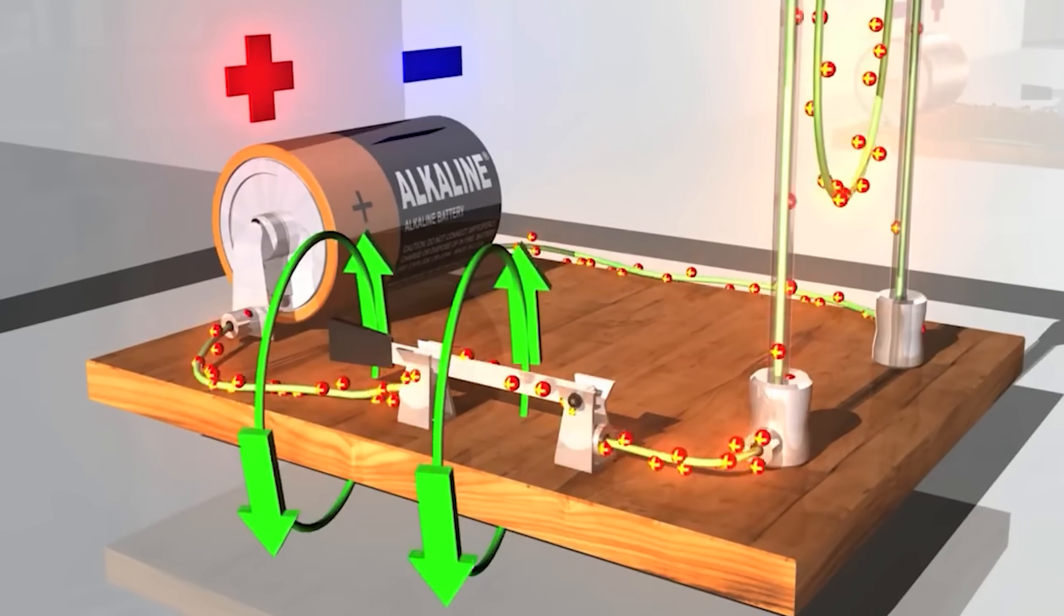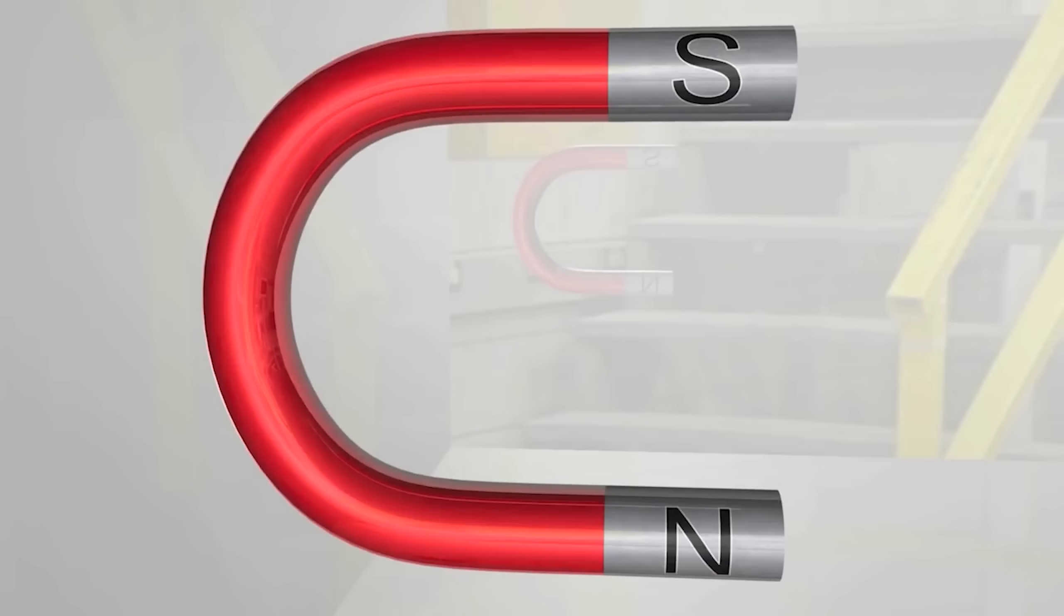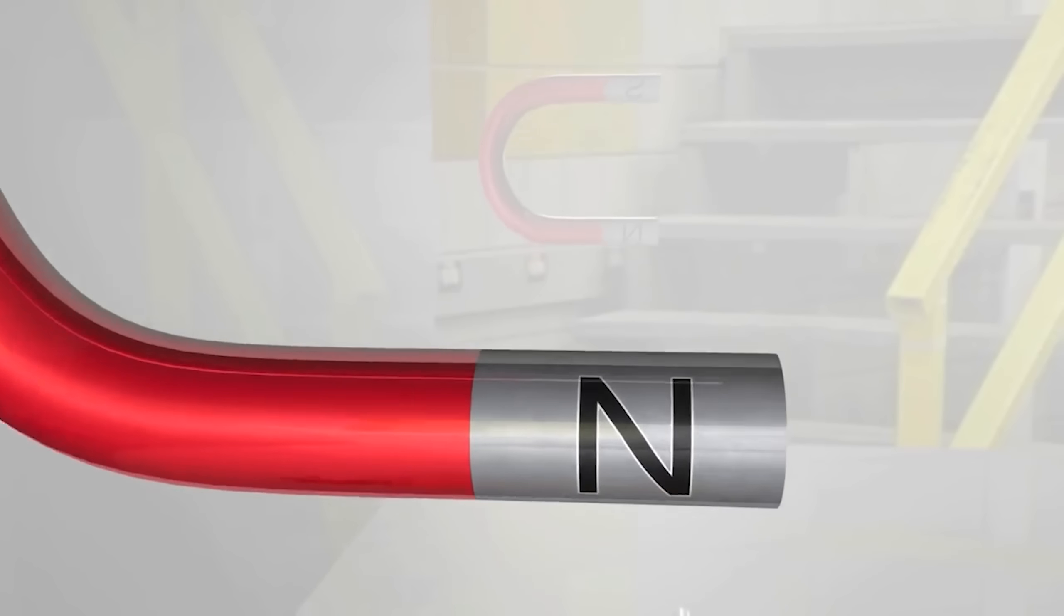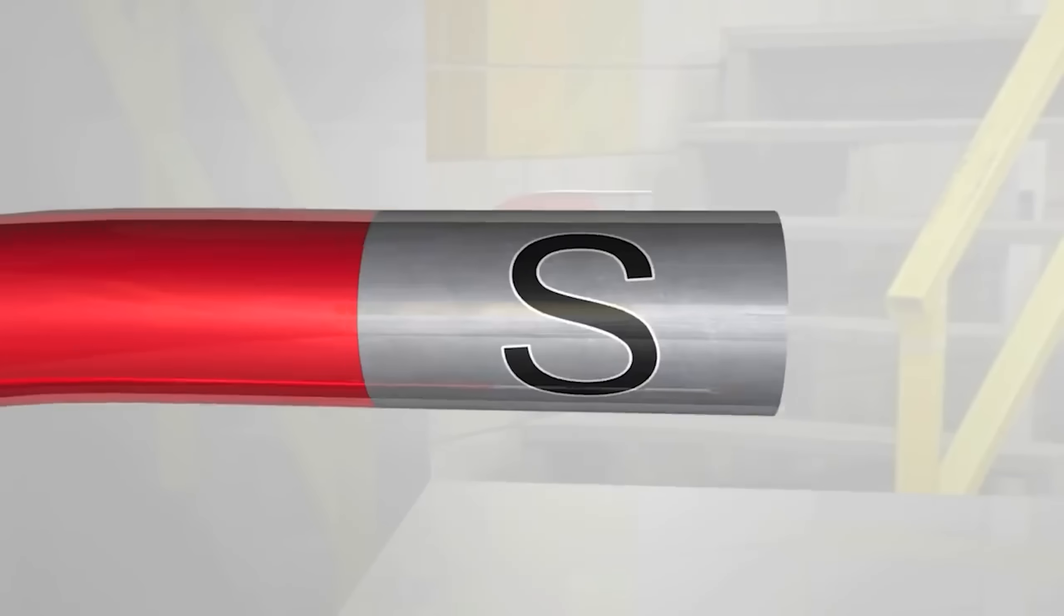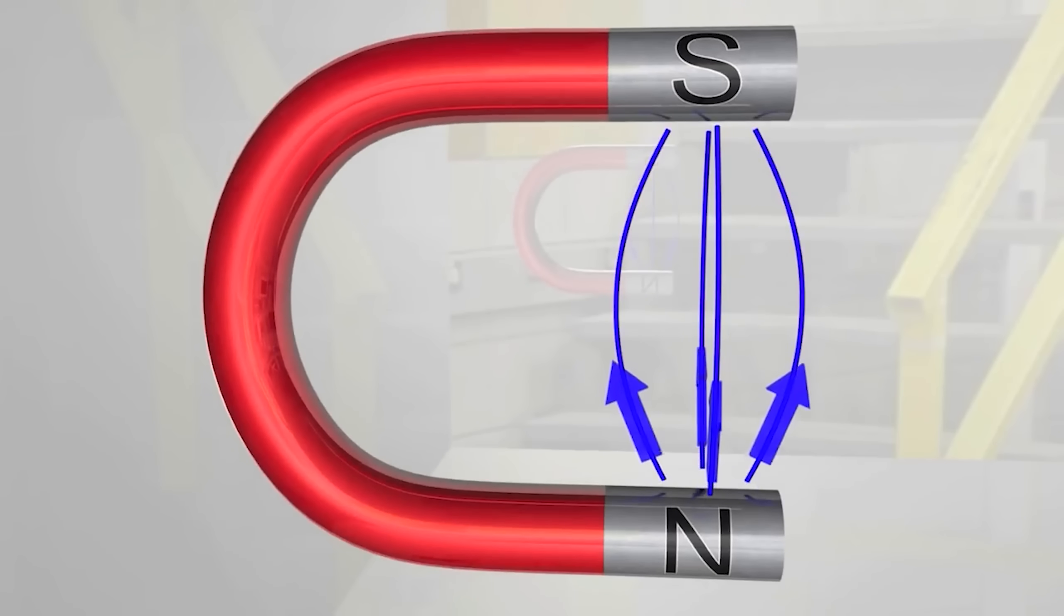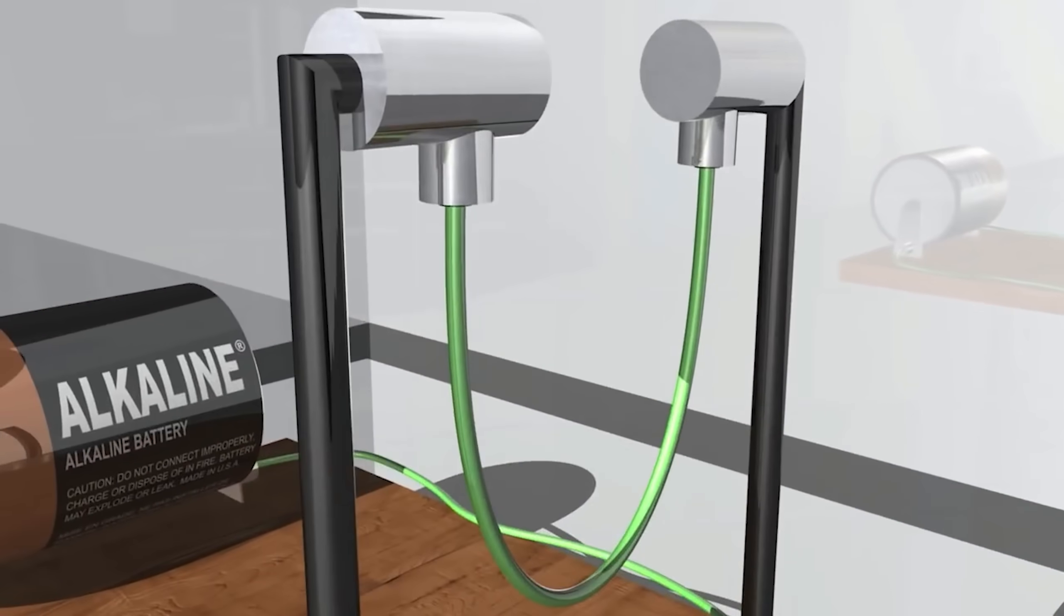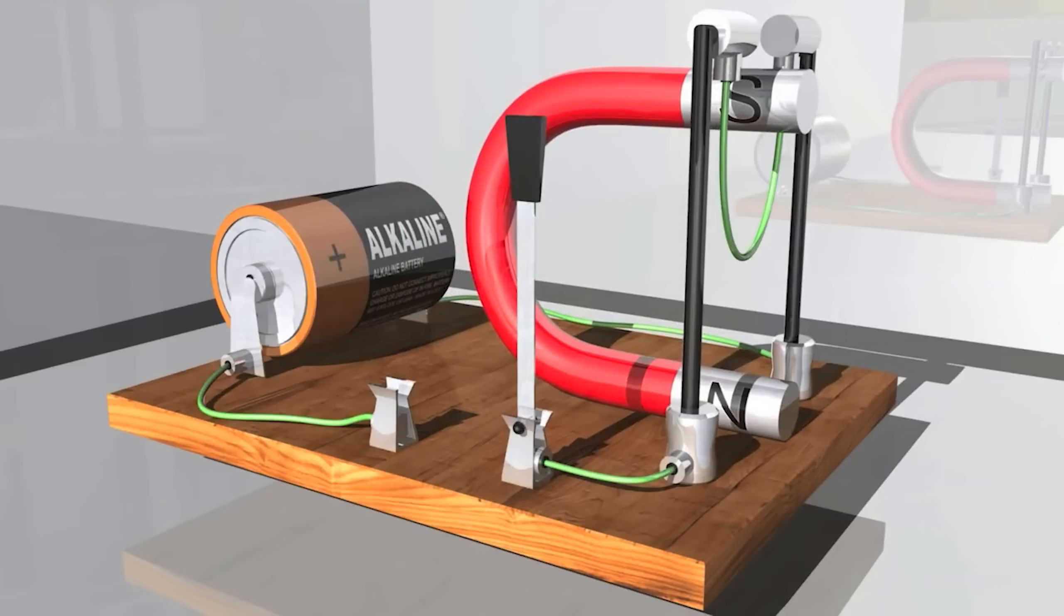And here we have a permanent magnet which generates an upward magnetic field from its north to south pole. Now what do you suppose would happen if we were to place the magnet directly surrounding the raised section of wire? We have a magnetic field going straight upward from the magnet and a current that, for all intents and purposes, will be traveling in this direction perpendicular to said magnetic field.